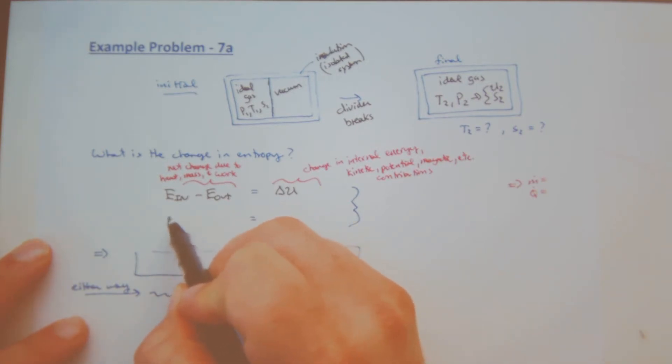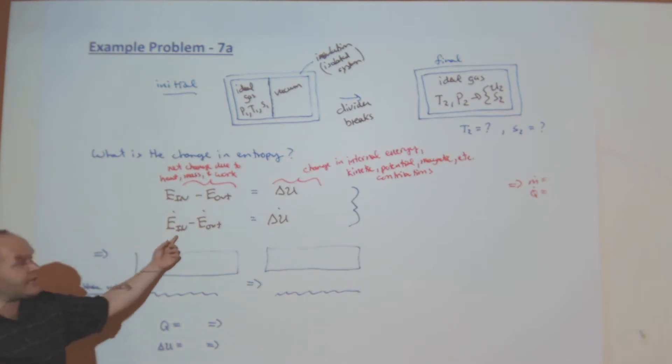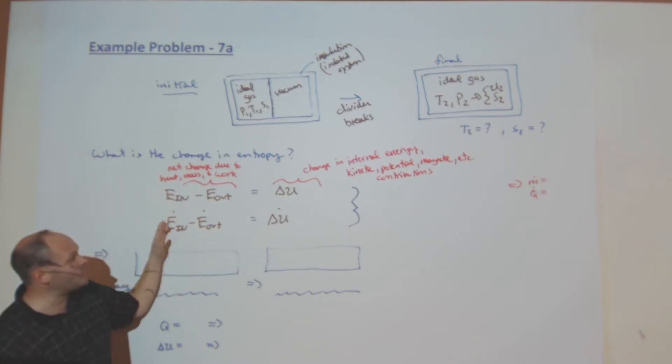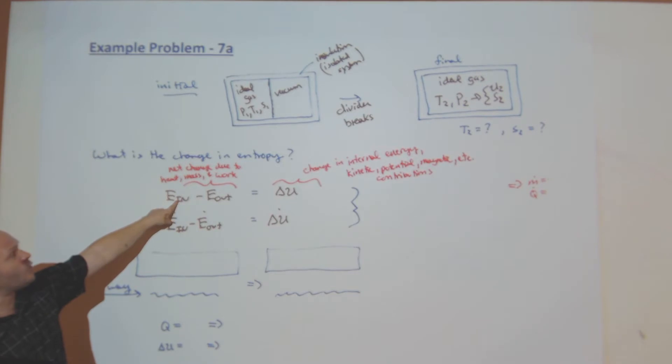Before I do that, I'm going to do energy balance. Energy in minus energy out equals my change in energy in my system, my internal energy. I can put this in rate form: Energy in dot minus energy out dot equals delta U dot. Now of course, I'm just looking at two states, the initial and final, so there's no sense going to rate form. But then let's think about this. What is my total energy into my system?